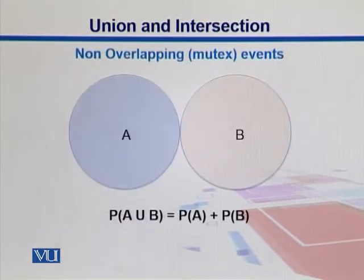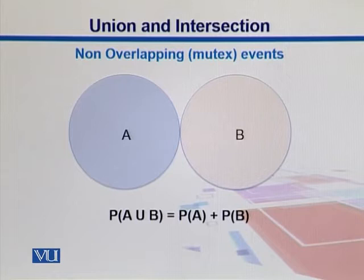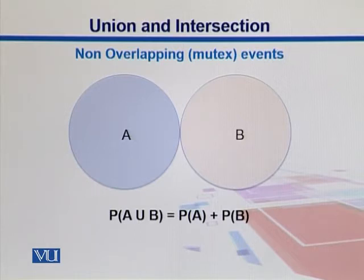The key difference between mutually exclusive events and non-mutually exclusive events is that mutually exclusive events do not have anything in common. So if we take their union, we can simply add their individual probabilities. The probability of A union B for mutually exclusive or non-overlapping events is given by: P(A ∪ B) = P(A) + P(B).